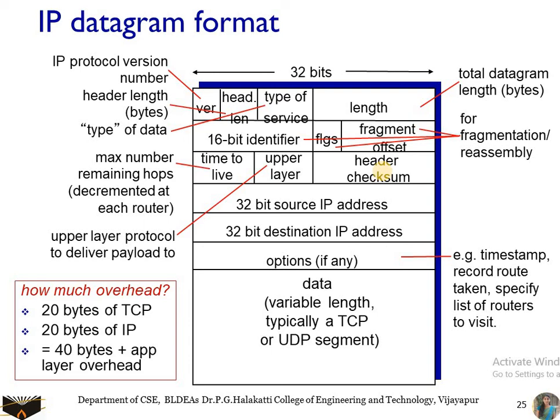Next we have the options field. The options field allows an IP header to be extended. Header options are used rarely, and the decision overhead is not trivial. The datagram header can be of variable length, and one cannot determine a priori where the data field will start. For this purpose the optional field is used, though most of the time it is not used.